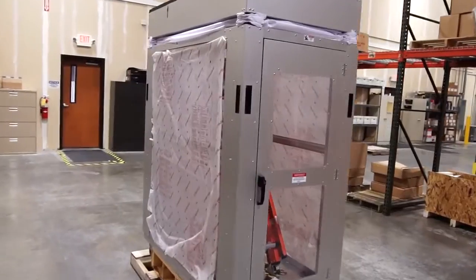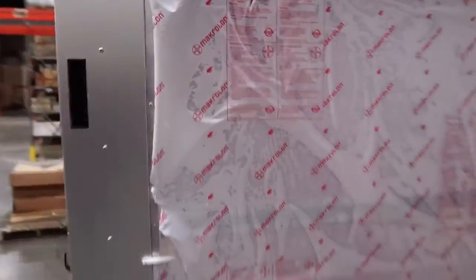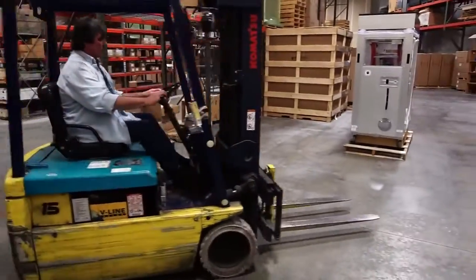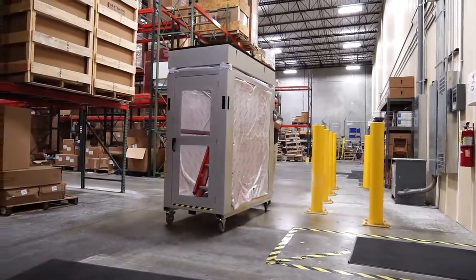The AG8000 is a hard-sided mobile containment unit designed to contain dust and debris during ceiling access work. It's an important device that helps protect patients and staff from any hazardous particulates that may be released during these operations.